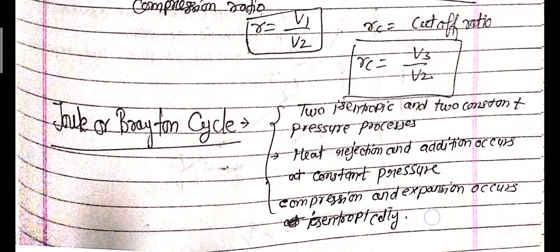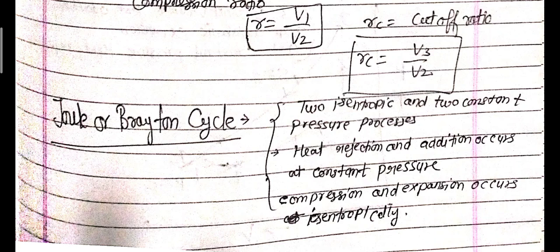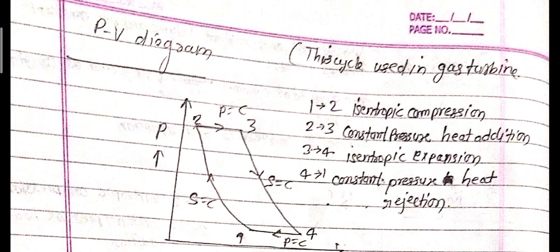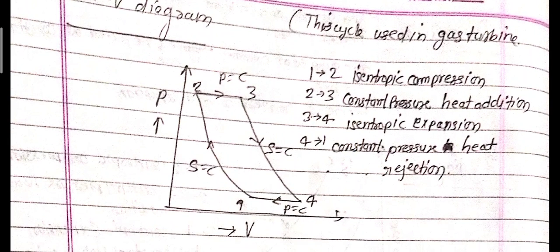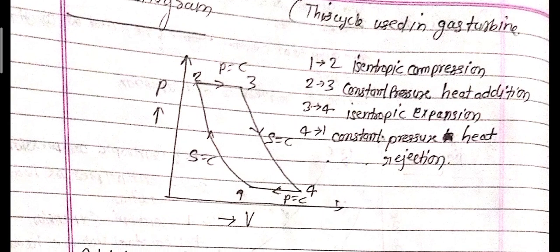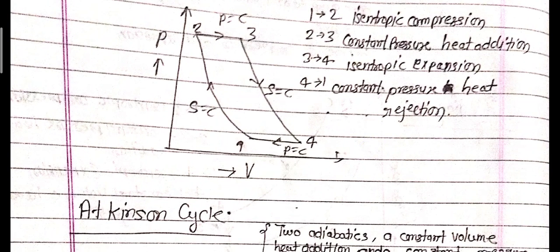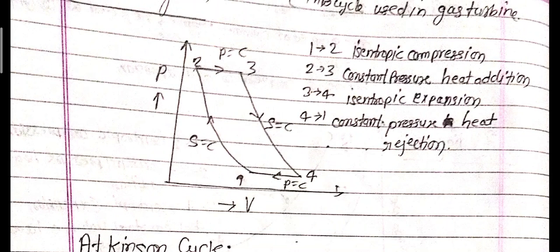The Joule or Brayton cycle has two isentropic and two constant pressure processes. Heat rejection and addition occur at constant pressure, and compression and expansion occur isentropically. This cycle is used in gas turbines. Process 1 to 2: isentropic compression. Process 2 to 3: constant pressure heat addition. Process 3 to 4: isentropic expansion. Process 4 to 1: constant pressure heat rejection.